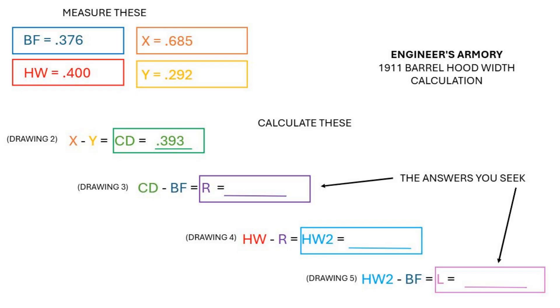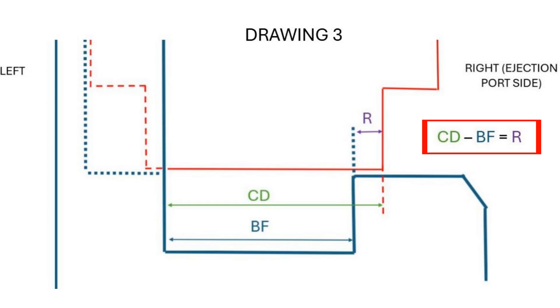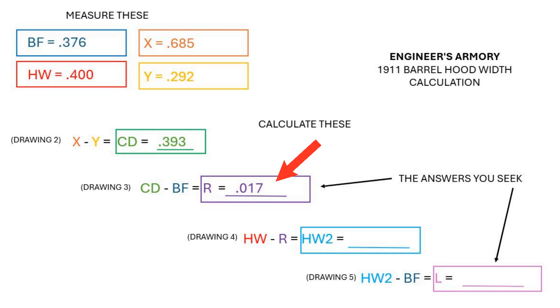We have our needed measurements. Let's do a quick check. The CD should be more than BF and HW should be more than CD. Subtract BF from CD. This is the material that needs removed from the right side or ejection port side of the hood. I will call this R. I get 17 thousandths of an inch.